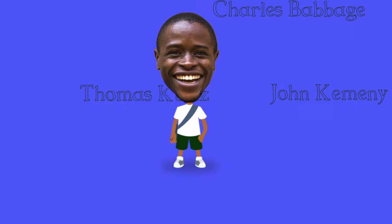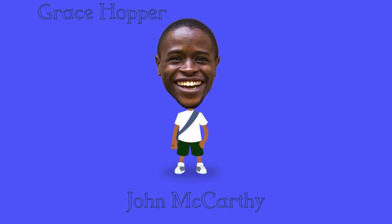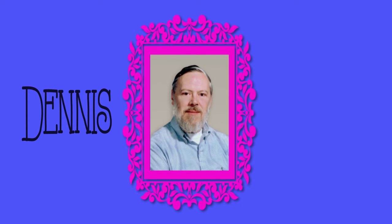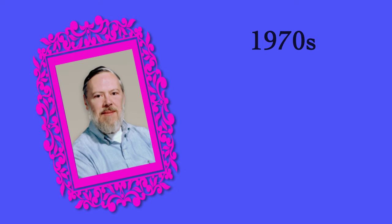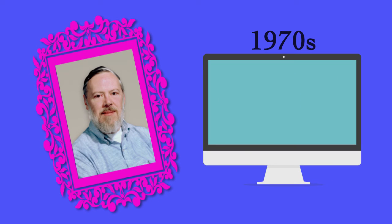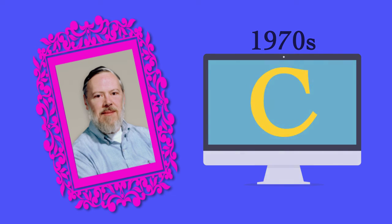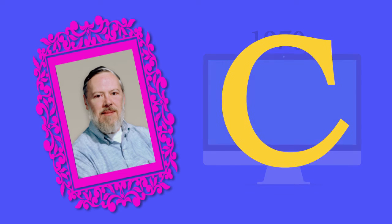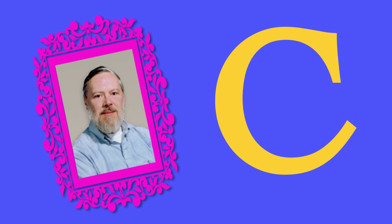There are so many names mentioned in the history of programming, but one name stands out: Dennis Ritchie. In the 1970s, he created a programming language that is like the father of all high-level languages. That language is referred to as C. Most modern-day programming languages borrow heavily from C.